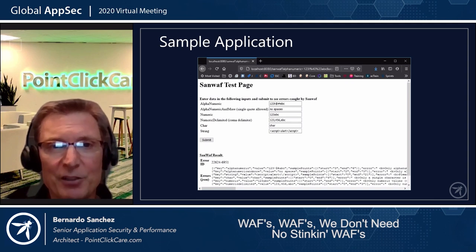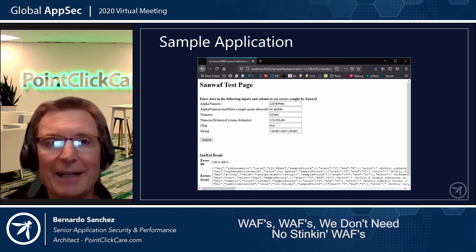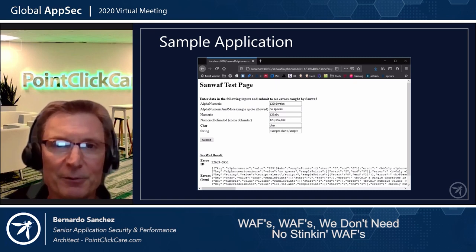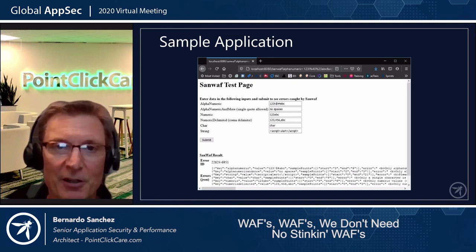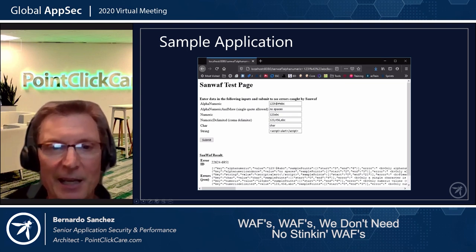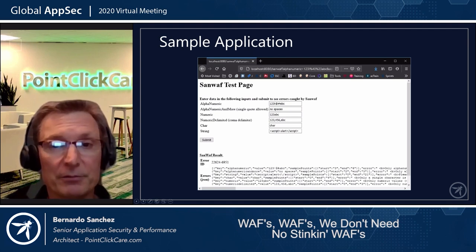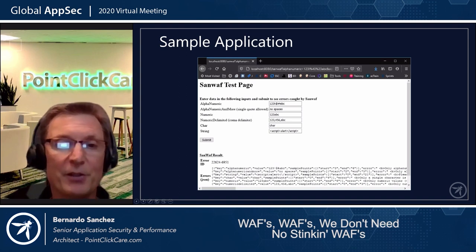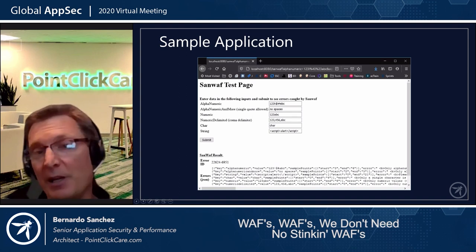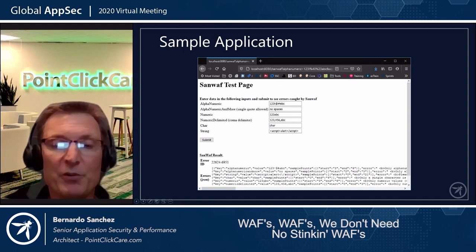If you download SANWAF, you also get a sample servlet — a very rudimentary servlet where all HTML is hard-coded — but it allows you to play and test with it. You can enter invalid data and see the SANWAF results with the error ID and error JSON listed. It's very useful for experimenting and for refining how you present error messages to end users.